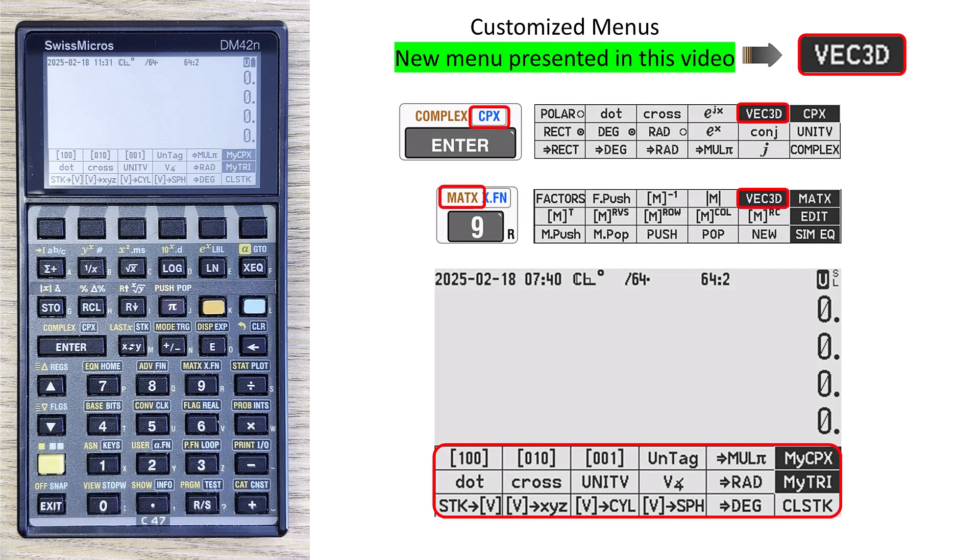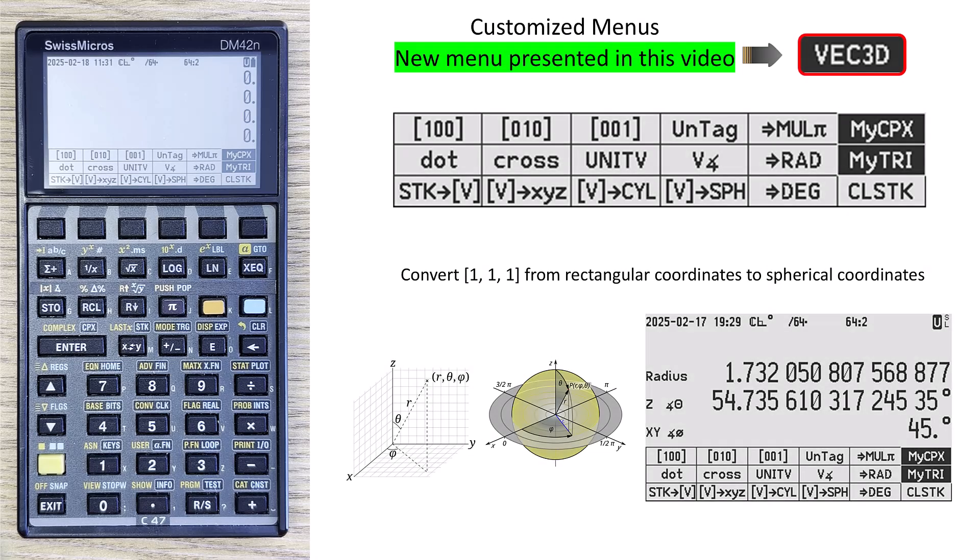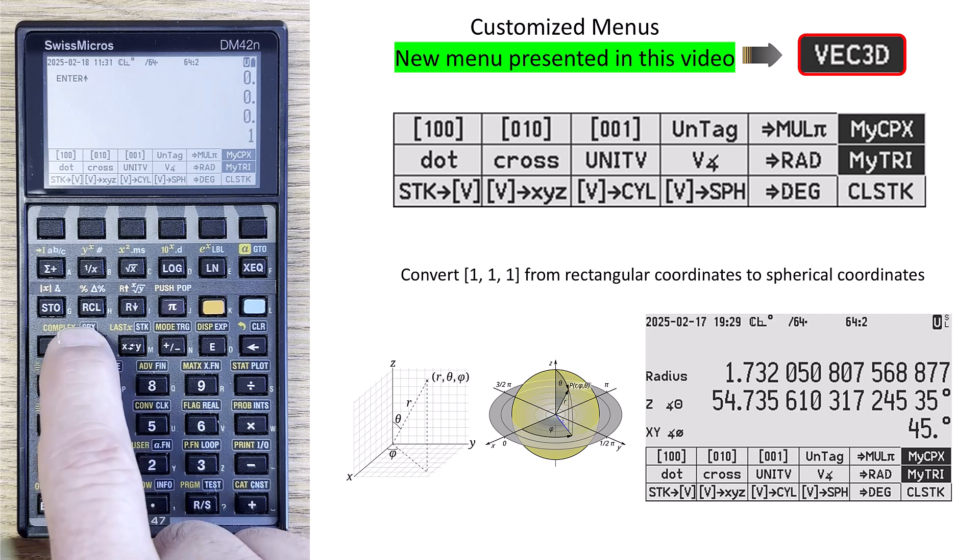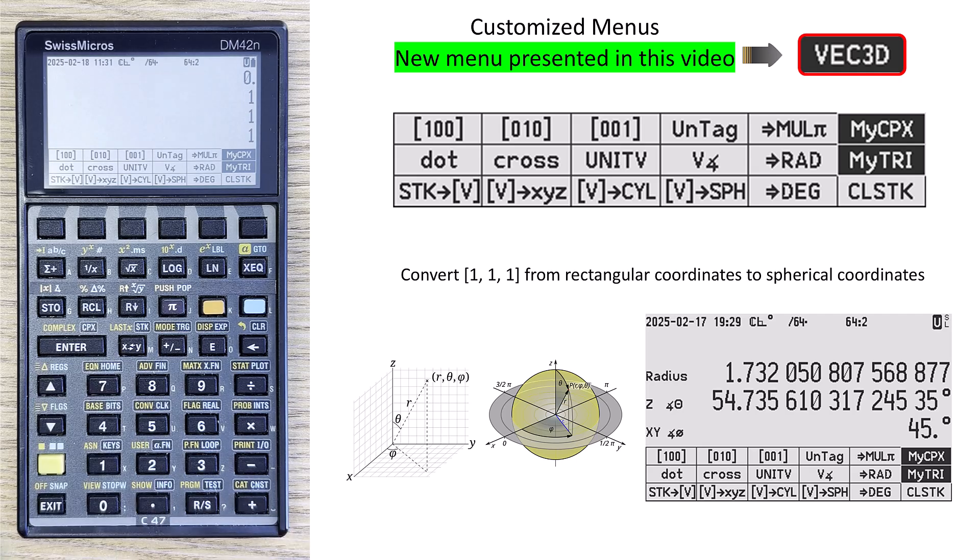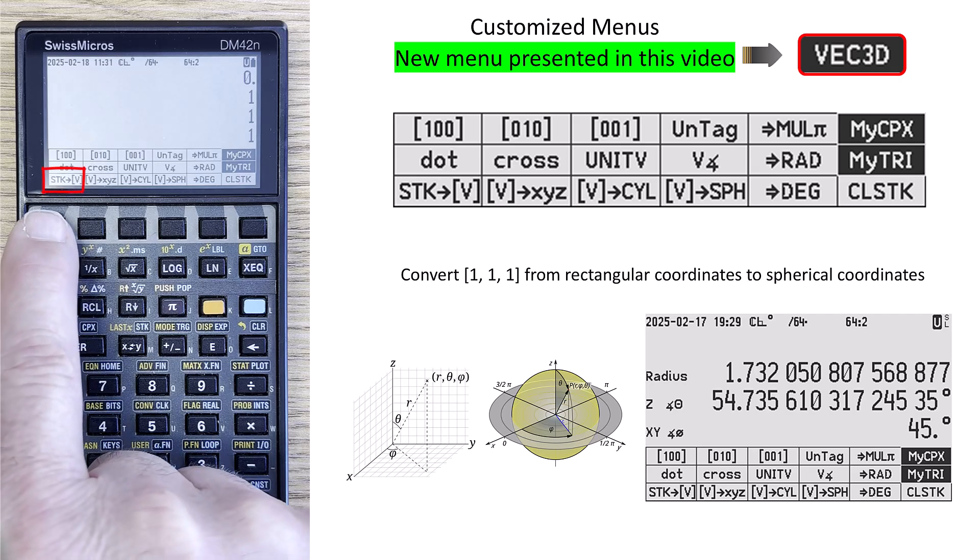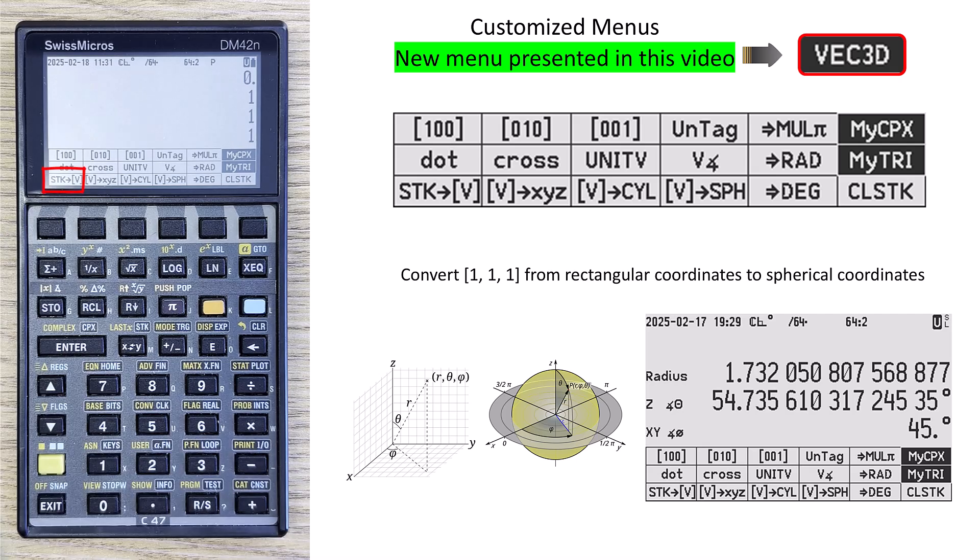So it looks like this. This is what I've created for my 3D vector, and I'll show it by using it. Let's say the first thing I want to do is convert a rectangular coordinate vector 1, 1, 1 to spherical coordinates. In this case, I would put 1 on the stack three times, so that's the X, Y, and Z values, and then this bottom F1 key will take the three values from the stack and put them into a vector format.